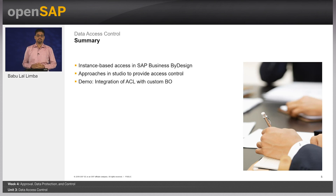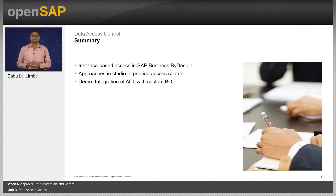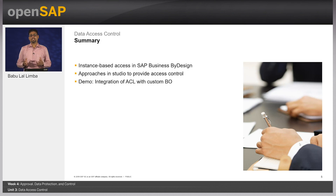With this we have reached the end of this unit. Let us have a quick recap: we covered an overview of access rights and access controls in Business ByDesign, how Business ByDesign controls access to data, different ways of achieving access control on custom business objects, and we integrated the ACL with a custom BO for access control as part of the demonstration. Please try the exercise for this unit for hands-on experience. Thank you and see you in the next unit. Have a great day, bye bye.